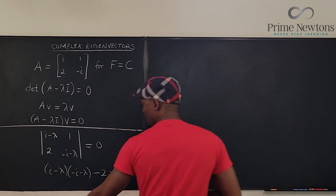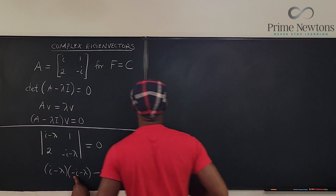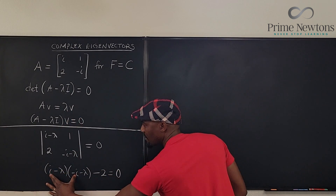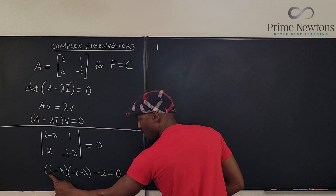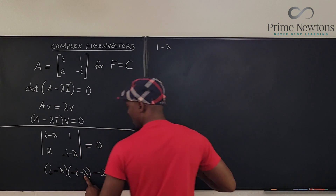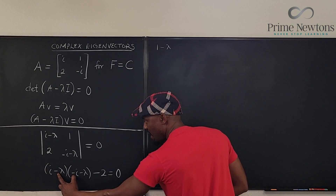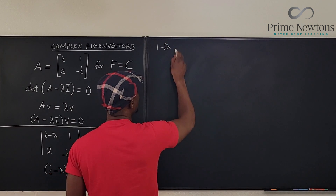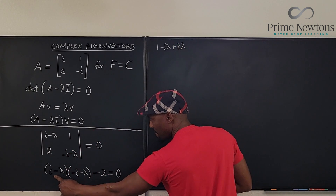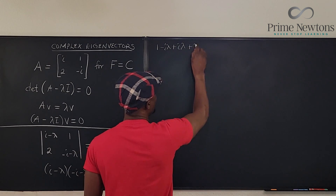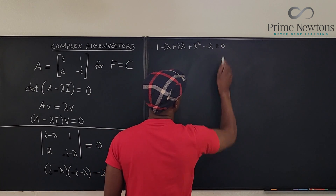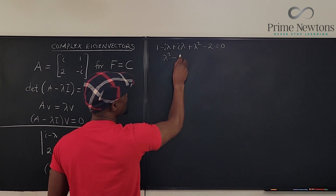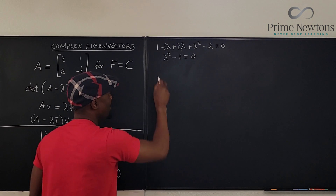So we have (i minus lambda)(negative i minus lambda) minus 2 times 1 equals zero. Distributing: i times negative i gives negative i squared which is one; i times negative lambda is negative i lambda; negative lambda times negative i is positive i lambda; and negative lambda times negative lambda is plus lambda squared. The i lambda terms cancel, giving us lambda squared plus 1 minus 2 equals zero.